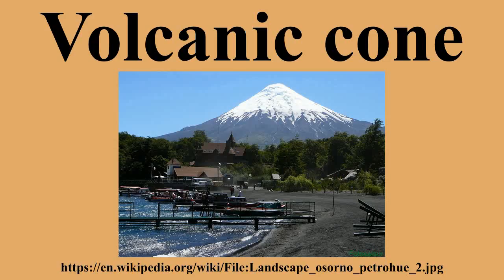Unlike shield volcanoes, stratocones are characterized by a steep profile and periodic explosive and effusive eruptions. Some have collapsed craters called calderas. The central core of a stratocone is commonly dominated by intrusive rocks ranging from around 500 meters to over several kilometers in diameter, surrounded by multiple generations of lava flows, many of which are brecciated, and a wide range of pyroclastic rocks and reworked volcanic debris. The typical stratocone is an andesitic to dacitic volcano associated with subduction zones.